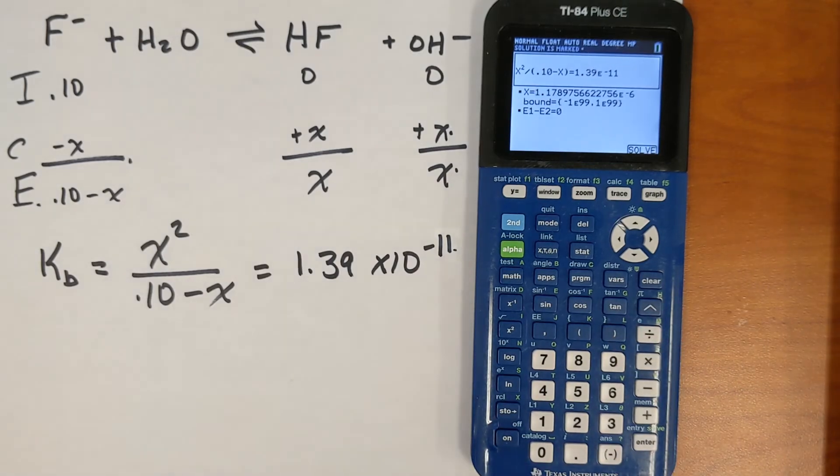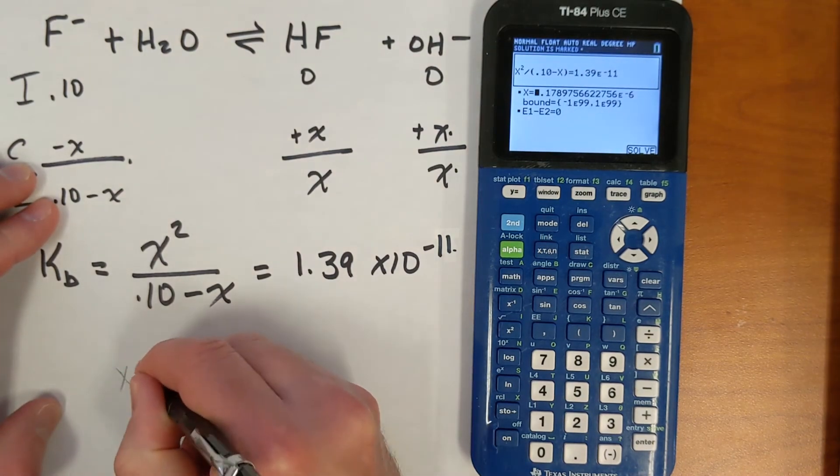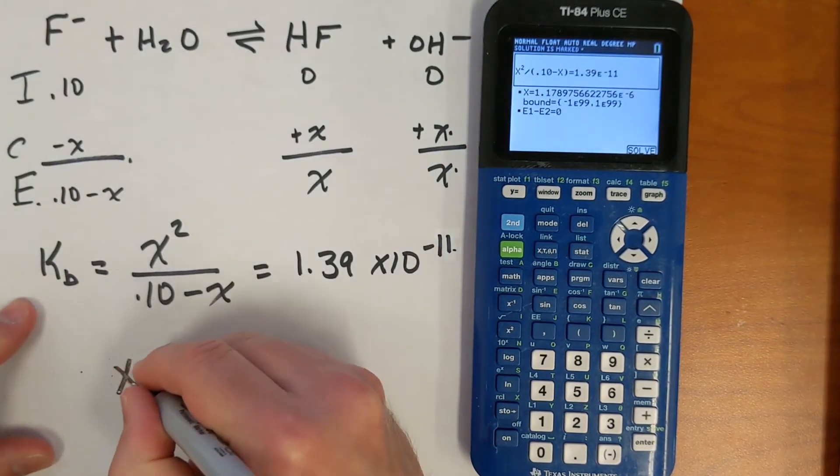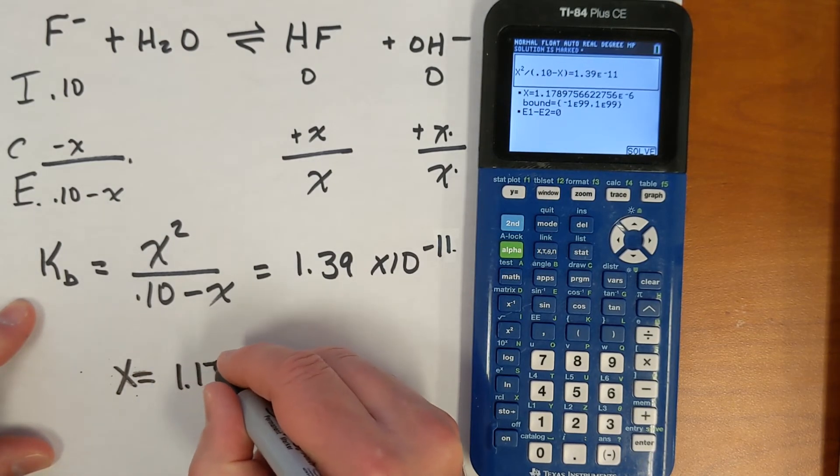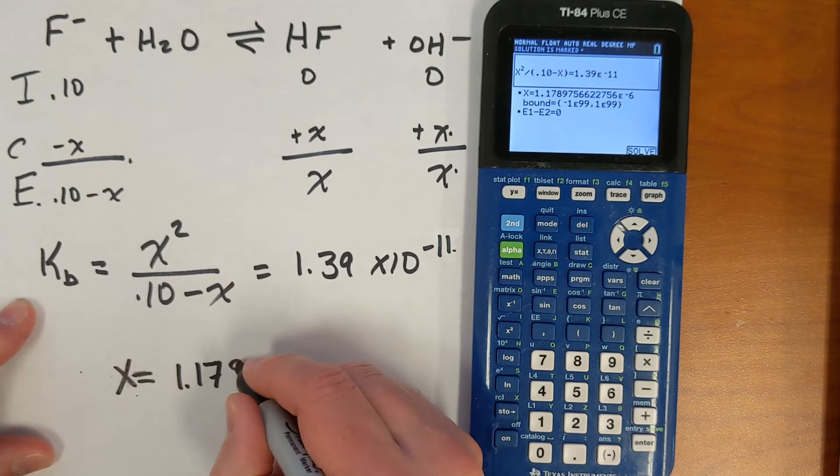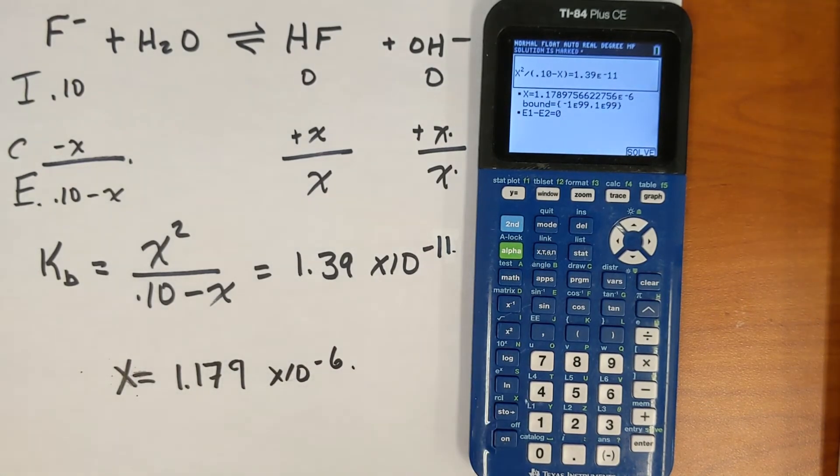Just like that, it's done. Now I do want to make sure that it gave me a positive root because technically speaking, there could and should be two roots to this. So that's the answer. So x is equal to, well here's a Sharpie here, x is equal to 1.179 times 10 to the minus 6. Okay, great. So we have an answer.